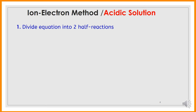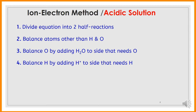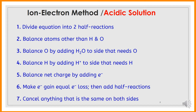In the ion-electron method, we divide the oxidation and reduction processes into individual equations called half-reactions. Step one: divide the equation into two half-reactions. Step two: balance atoms other than hydrogen and oxygen. Step three: balance oxygen by adding H₂O to the side that needs oxygen. Step four: balance hydrogen by adding H⁺ to the side that needs it. Step five: balance net charge by adding electrons.